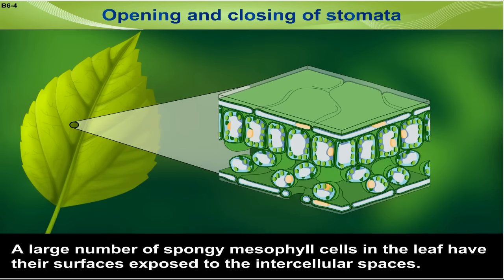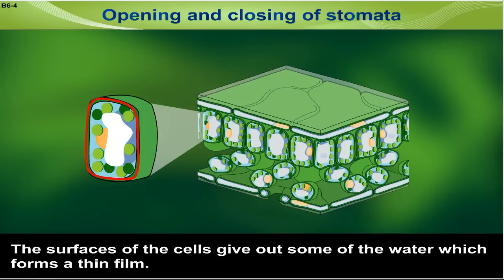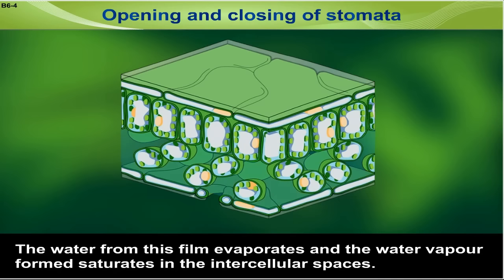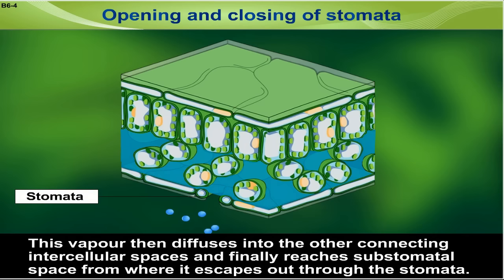A large number of spongy mesophyll cells in the leaf have their surfaces exposed to the intercellular spaces. The surfaces of the cells give out some of the water, which forms a thin film. The water from this film evaporates and the water vapour formed saturates the intercellular spaces. This vapour then diffuses into the connecting intercellular spaces and finally reaches the substomatal space, from where it escapes out through the stomata.